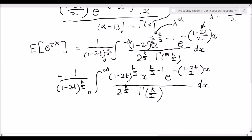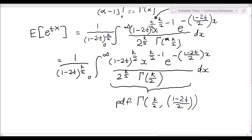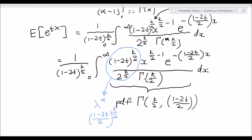This integrand is simply the PDF of a gamma distributed random variable with shape parameter k over 2 and rate parameter 1 minus 2t over 2. Since we are integrating over the entire support of this probability density function, the integral evaluates to 1. To make this 100% clear: the left part annotated is lambda to the power of alpha, where lambda is 1 minus 2t over 2 and alpha is k over 2 — confirming the link between the gamma and chi-squared distributions.